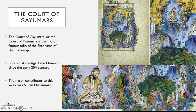Now we're going to take a look inside the work. This is the Court of Gayumars — also called the Court of Kaiumars — and it still resides at the Aga Khan Museum. It's important to mention that any miniature from an illuminated work should not be thought of in isolation; we should be mindful of the relationship between text and images. The Court of Gayumars is attributed largely to Sultan Muhammad.